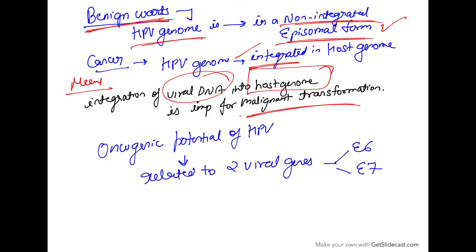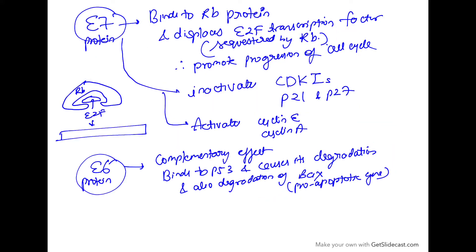Now the oncogenic potential of HPV is related to two viral genes: E6 and E7. The E7 protein binds to the RB protein, retinoblastoma protein, and displaces the E2F transcription factor. The RB gene sequesters E2F, so it acts as a brake. E7 binds to RB protein and displaces E2F, so E2F can bind to DNA and promote transcription, promoting progression of the cell cycle.